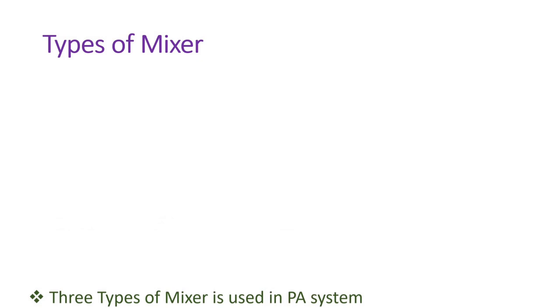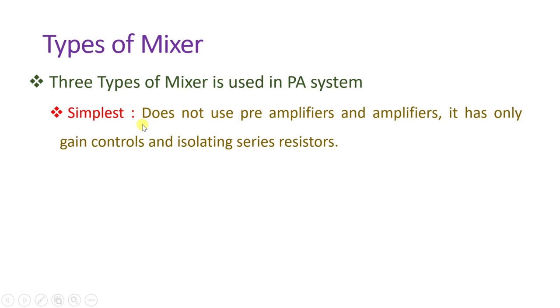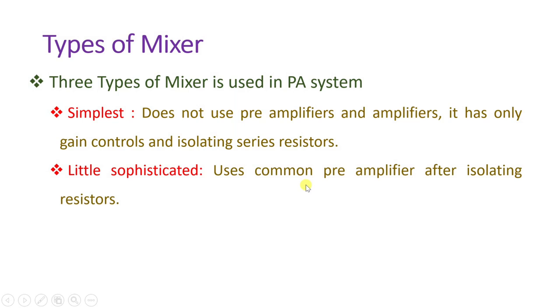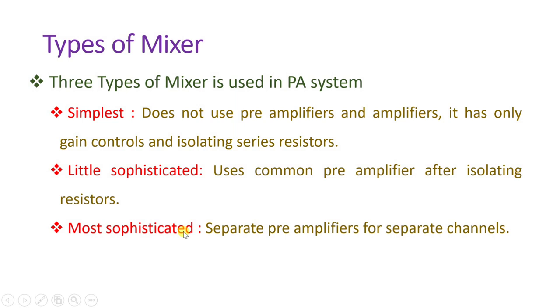There are three types of mixers. The simplest type does not have pre-amplifiers or amplifiers — it has only gain control and isolating series resistors. A little more sophisticated mixer has a common pre-amplifier after the isolating resistors — one pre-amplifier shared by all channels. The most sophisticated mixer has separate pre-amplifiers for each individual channel.